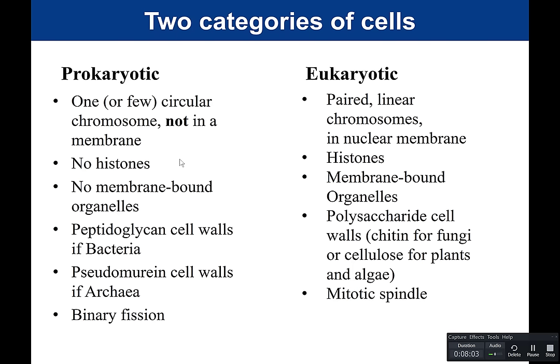Some bacteria also have an S-layer — a single layer of thousands of copies of one protein linked together like chain mail. The S-layer is located outside the peptidoglycan and beneath the glycocalyx, and is only produced when bacteria are in a hostile environment.